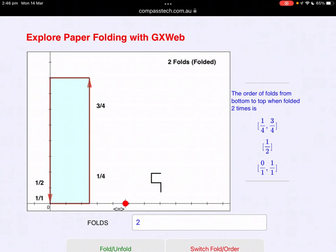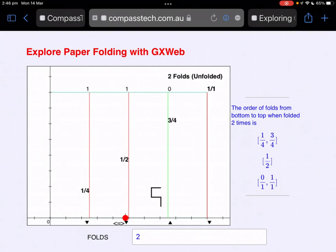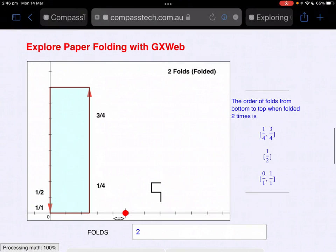Starting at the top, you'll find the 1/4 fold. It represents a quarter of the page when unfolded. Let's have a look at the unfolded page. As expected, 1/4 on the left, a half in the middle and 3/4. Fold it.